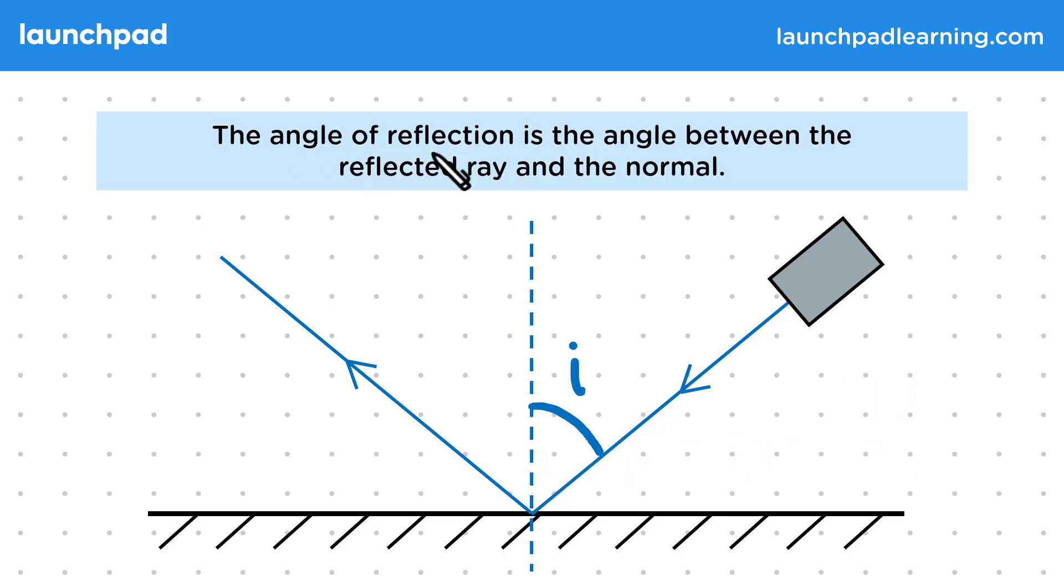The angle of reflection is the angle between the reflected ray and the normal. So for our diagram, this angle here would be the angle of reflection. We can represent this using the letter R. But why do we want to measure these angles?